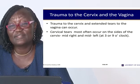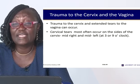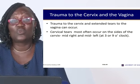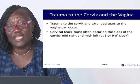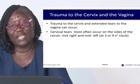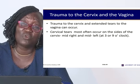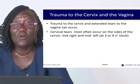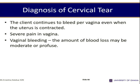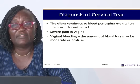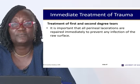Using the clock system, you can precisely describe where a cervical tear is — for example, a tear at 9 o'clock or 12 o'clock. Cervical tears are diagnosed when the client continues to bleed despite a well-contracted uterus with no retained products. Continued vaginal bleeding with a well-contracted uterus indicates a cervical or vaginal tear.